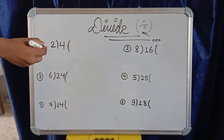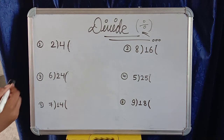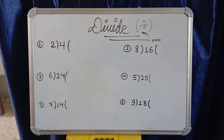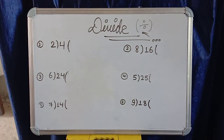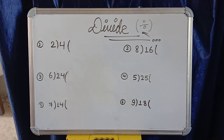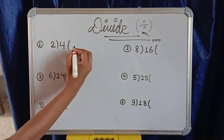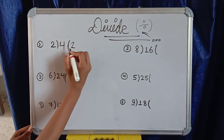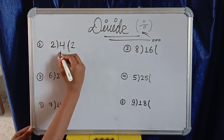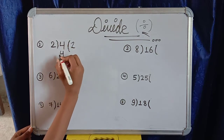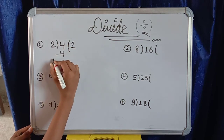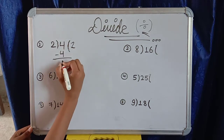Question number one is 2 divided by 4. We use the 2 times table: 2 ones are 2, 2 twos are 4. So the answer is 2. Here we write 2, and here we write 4, then minus 4, which gives zero.